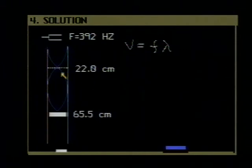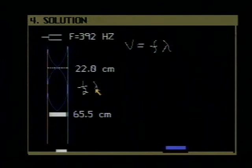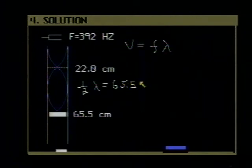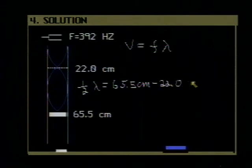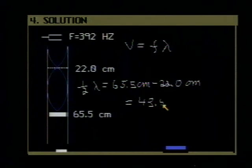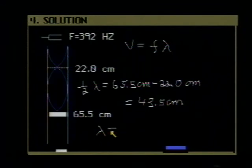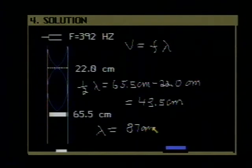The distance between the two nodes in a standing wave is equal to one half the wavelength. So one half the wavelength must then be equal to the difference 65.5 centimeters minus 22.0 centimeters, which is equal to 43.5 centimeters. Therefore, the wavelength itself is twice 43.5 or 87 centimeters, which we can write as 0.87 meters.